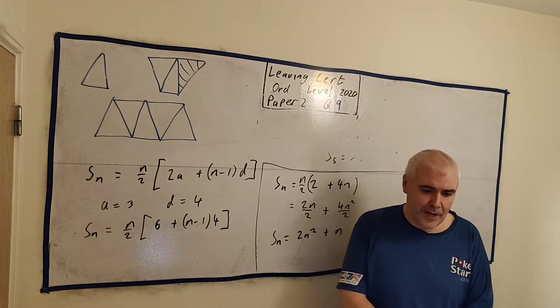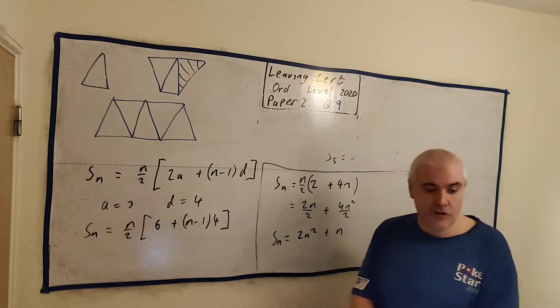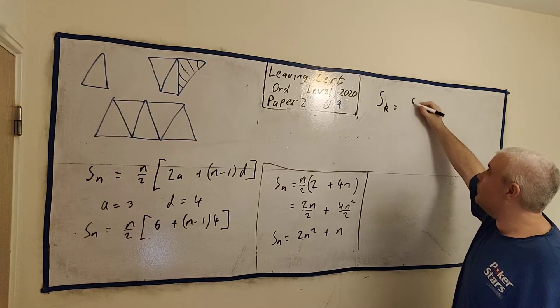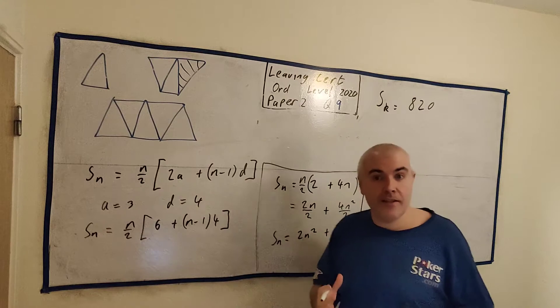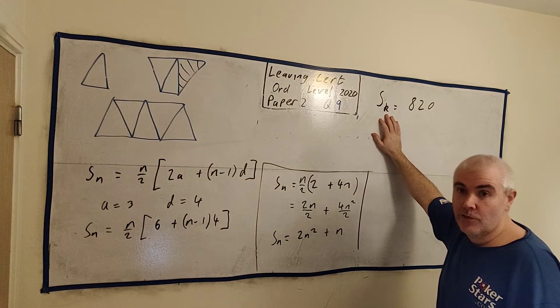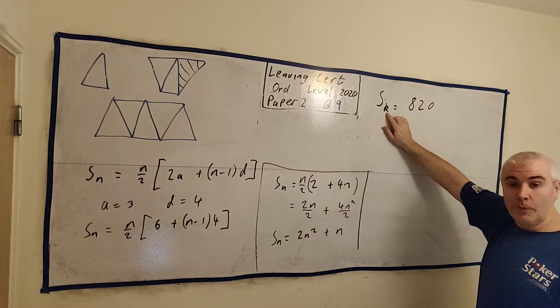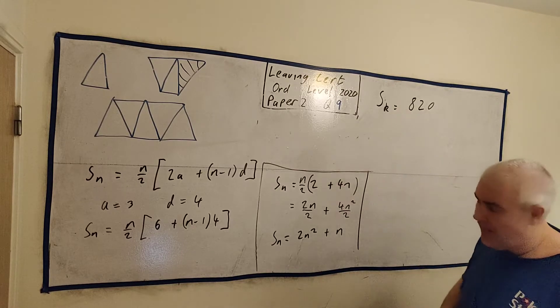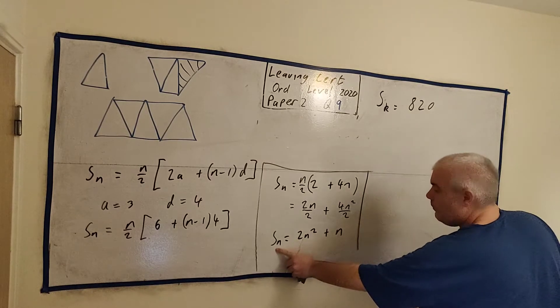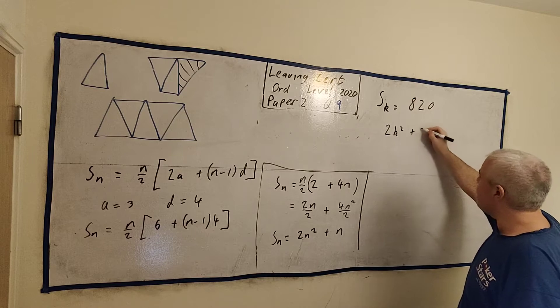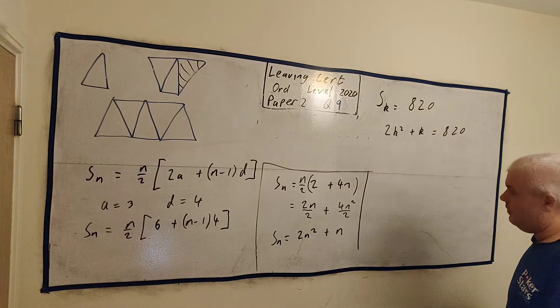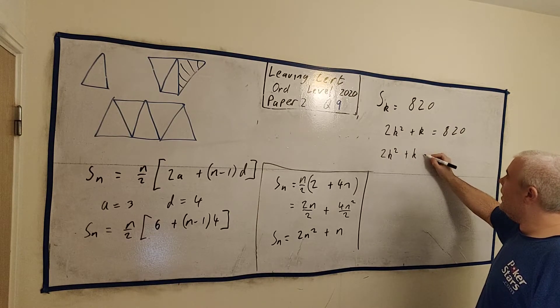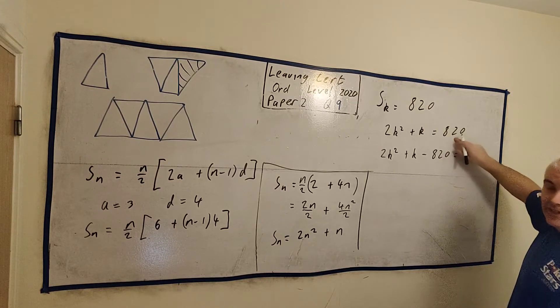Find the total number of complete patterns in the sequence that can be made using 820 matchsticks. So what that is saying is S something equals 820. How many, there is a pattern, we don't know what it is. Maybe it's S5, maybe it's S20. It's a number we don't know. So we'll just put K there. So really, SK. Well, here's S any number I want. So this is 2K squared plus K must equal 820. This might look scary, but it's just a quadratic. If I rewrite it, 2K squared plus K minus 820 equals 0.